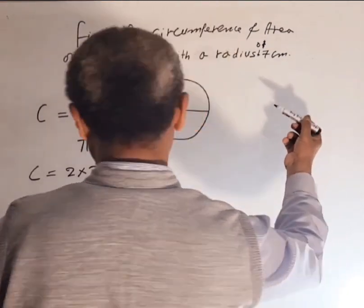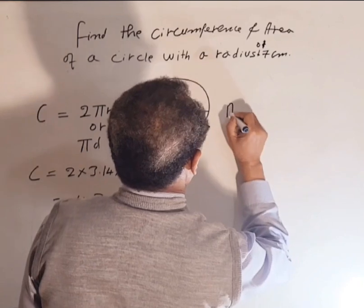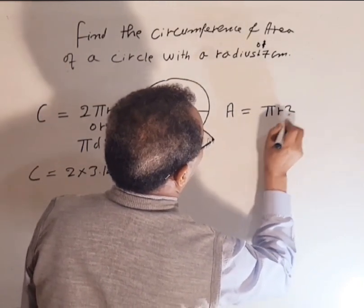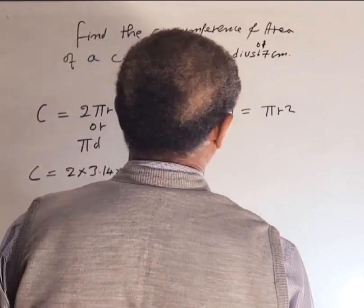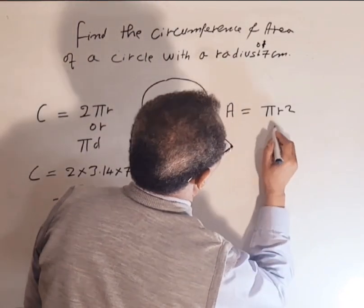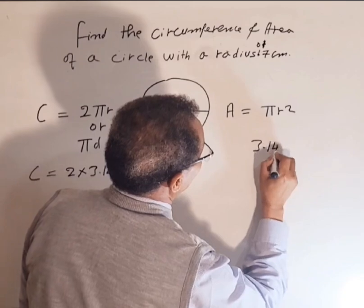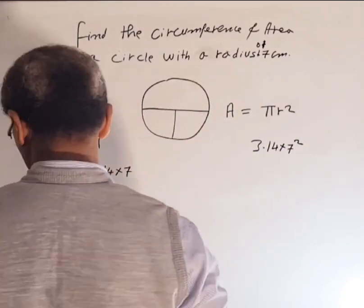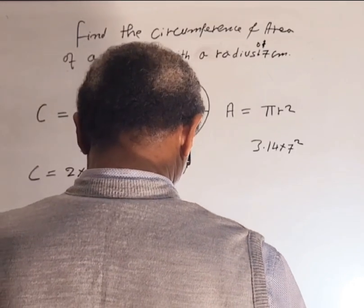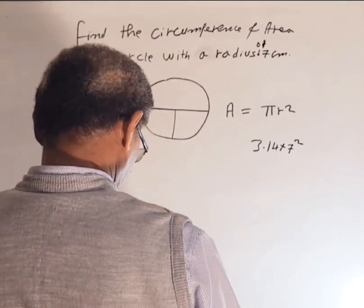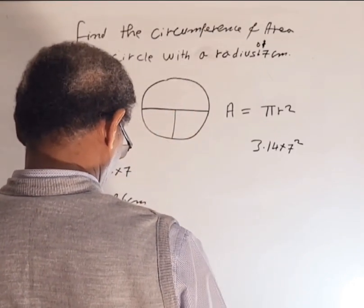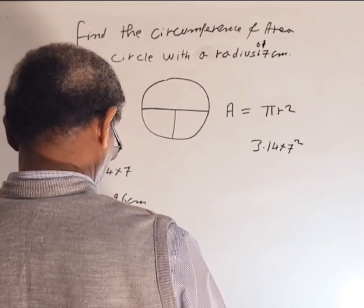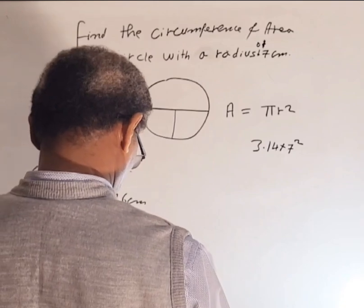Let's do the area. Area equals πr². So π is 3.14 times 7 squared. Let's do again the calculator. 3.14 times 7 squared.